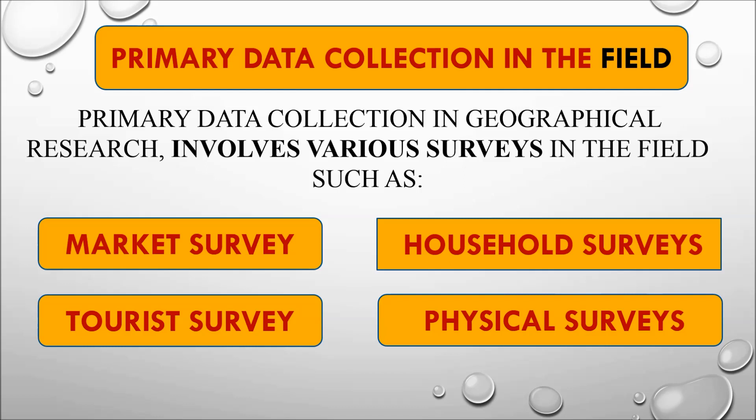If we have to study the economy of a particular area, we go to the market and conduct surveys through interviews, questionnaires, and various methods. Similarly, we go to households in a sample area, or talk to tourists about their perception of that area, their choices, and economic matters. Physical surveys involve recording and measurement of physical phenomena — for example, measuring a lake's circumference or assessing water quality.